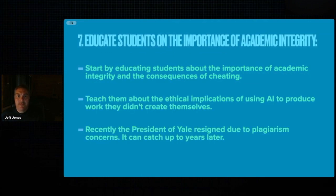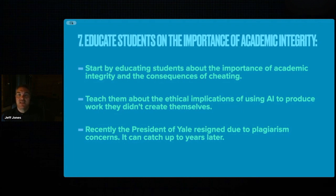Number seven: educate students on the importance of academic integrity. Start by educating students about why academic integrity is important and the consequences of cheating. In a lot of cases you could fail the assignment, fail the class, or even be expelled. Teach them about the ethical implications and try to make it an exciting idea — that this is a synthesis only they can make. Recently, the president of Yale resigned due to plagiarism. This can come back to haunt you 15, 20, 30 years later. Explain to your students how important it is to not use AI or any other tool to submit work for them, because it can come back to haunt them.